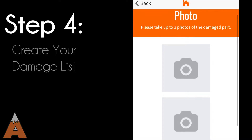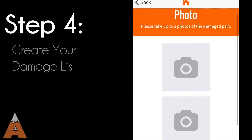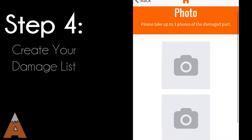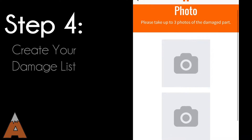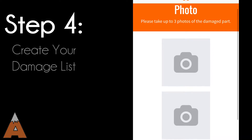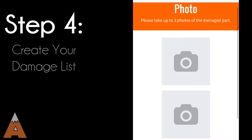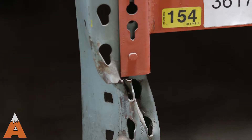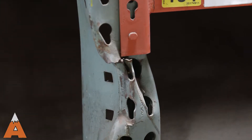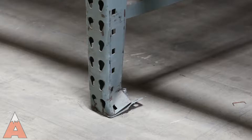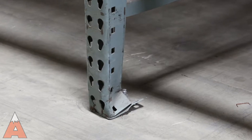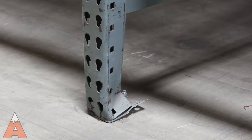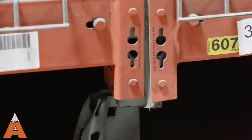Now you are ready to create your damage list. Take up to 3 photos of the anchor damage. The first photo should show the damaged anchor from a distance. The second photo should be up close, showing the damage clearly. The third photo should capture any additional details needed, such as the back of the anchor, shims, or related upright damage.